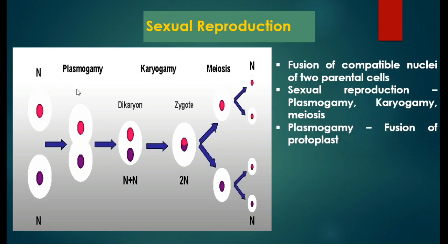Plasmogamy is the fusion of protoplast. Two parental cells fuse with each other and their protoplasm is also fused, and this process is called plasmogamy.